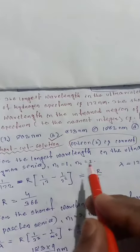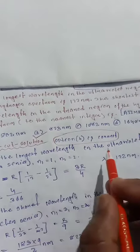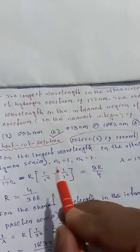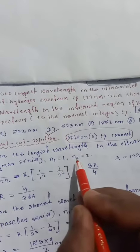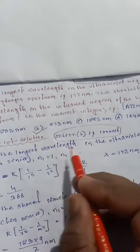For the longest wavelength, N1 equals 1. In the ultraviolet region, this means Lyman series where N1 equals 1 and N2 equals 2 for the longest wavelength.